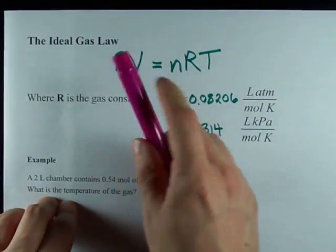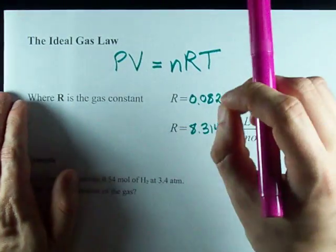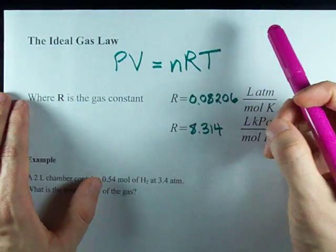P is the pressure, V is the volume, N is the number of moles, and T is the temperature in Kelvin.